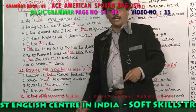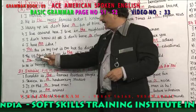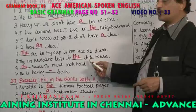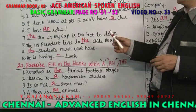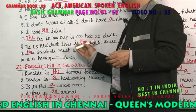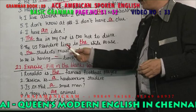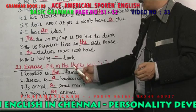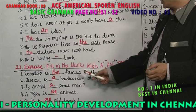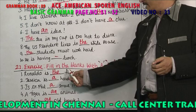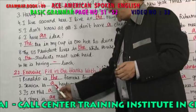The US President lives in the White House. The students must work hard. He is having lunch. Ronaldo is the famous football player. Jessica is a hardworking student.